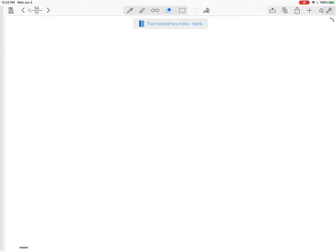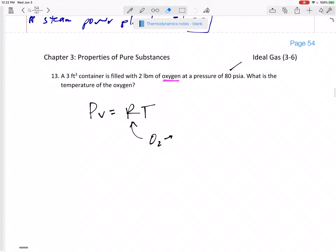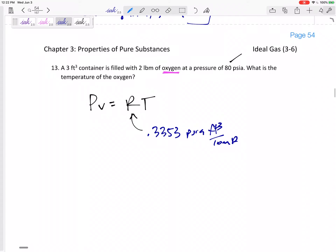All right, so let's go back to our notes. This R value for oxygen is 0.3353 PSIA feet cubed per pound mass Rankine. Okay, so let's fill this out. Let's write this equation. 80 PSIA. A specific volume. What is specific volume? It's total divided by mass. It is 3 feet cubed divided by 2 pound mass.